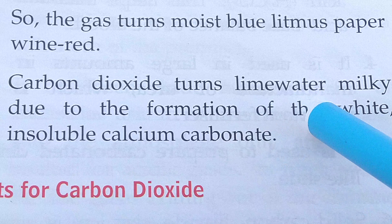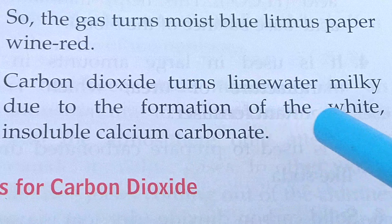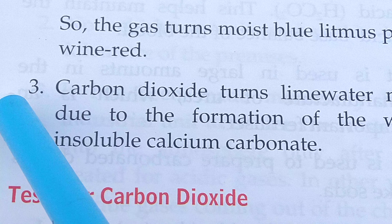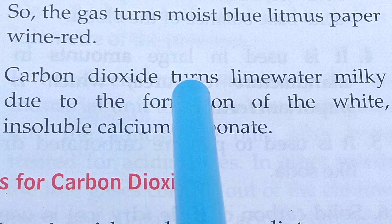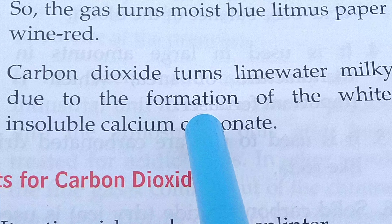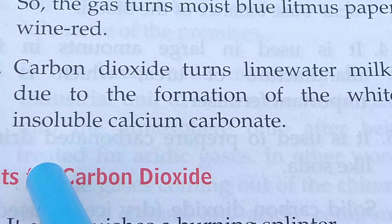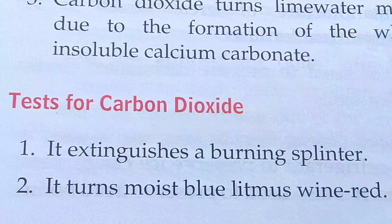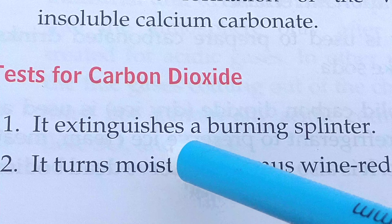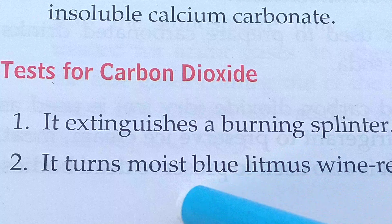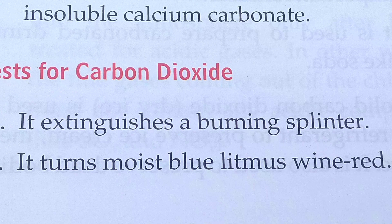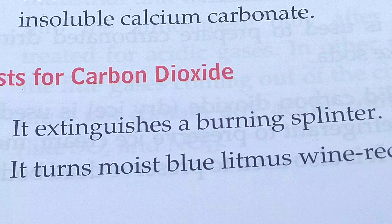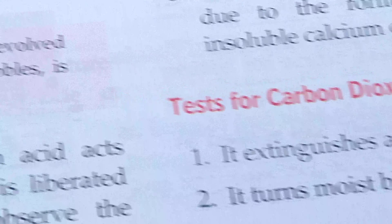So the gas turns moist blue litmus paper red. Carbon dioxide turns lime water milky due to the formation of white insoluble calcium carbonate. Tests for carbon dioxide: it extinguishes a burning splinter. It turns moist blue litmus paper red because carbonic acid is formed — that's why it turns the litmus paper red.